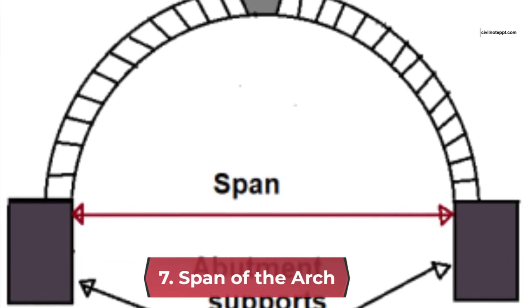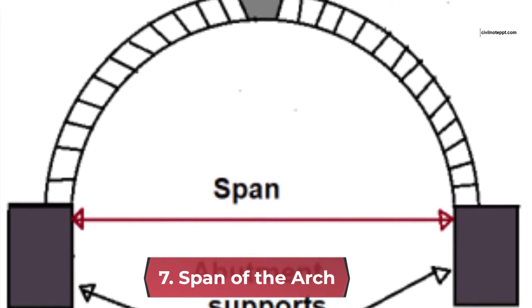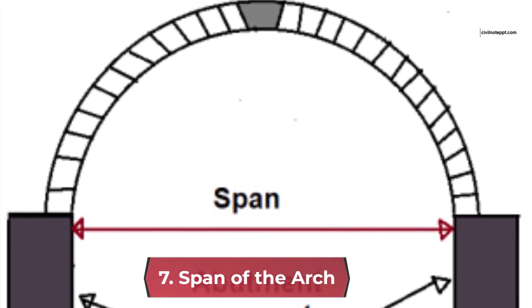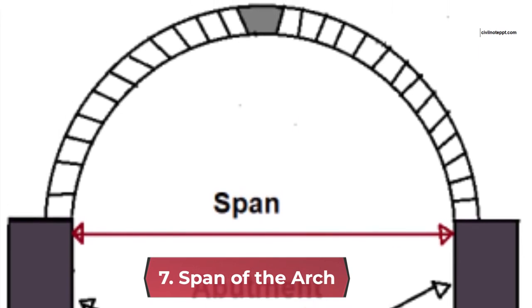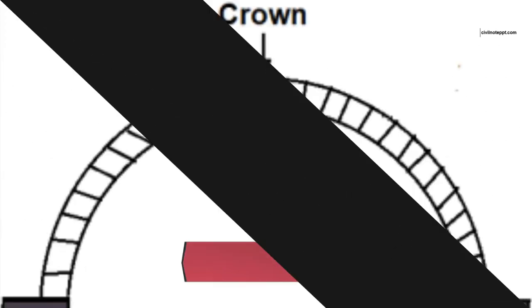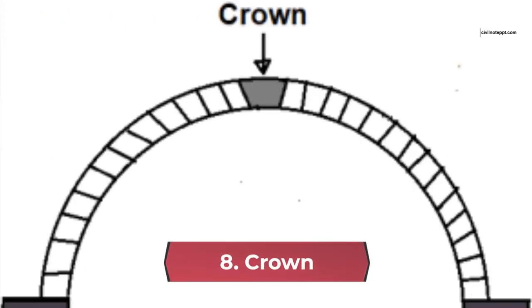7. Span of the arch. The span of the arch is nothing but the clear horizontal distance between the supports. 8. Crown. The crown is the highest part of an arch. In other words, it is the highest point of the extrados of the arch.